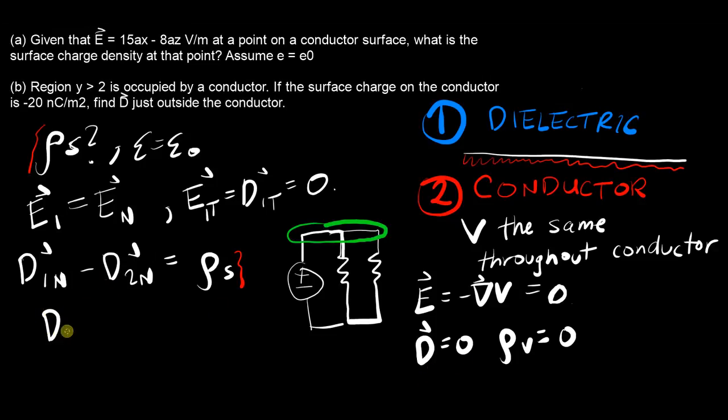So we can just say that D₁ₙ is equal to ρs. But again, they didn't say anything about what the conductor surface is like—they didn't say it's like y equals 2, ρ equals 4, or anything. We don't know what the normal direction is, or at least it's not as obvious.